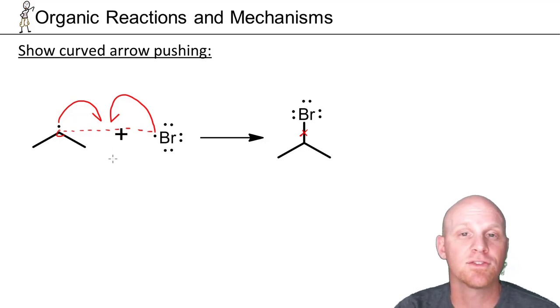The dashed line technically is not essential. But some professors, maybe yours, would prefer you draw it. Really up to them. But this is the curved arrow pushing for radicals, something you should be a little bit familiar with. But again, much less common than the others we've seen.